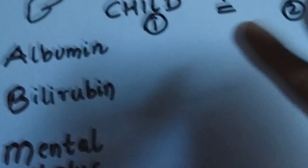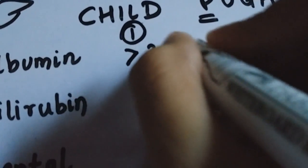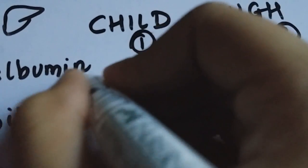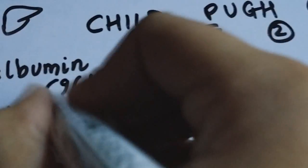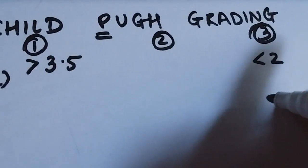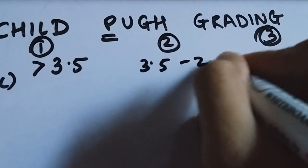Okay, so albumin, if it is greater than 3.5 grams per deciliter, then you give one point to the patient. And if it's less than 2, then you give 3 points to the patient. And if it's anywhere between 3.5 and 2, you give 2 points.